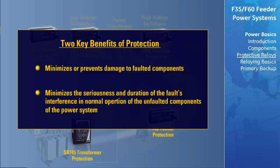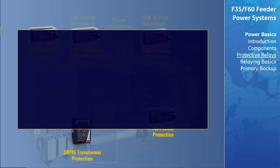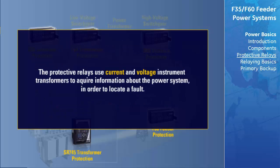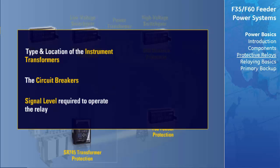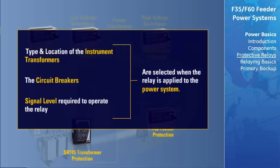The second benefit is that the quick response minimizes the seriousness and duration of the fault's interference with normal operation of the unfaulted parts of the system, allowing them to continue to supply their normal power. In many cases, the unfaulted parts of the power system can supply the additional power to replace what was normally supplied through the faulted component. The protective relay uses current and voltage instrument transformers to acquire information about the system such that a fault can be located.